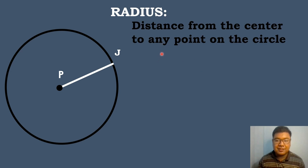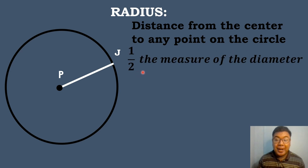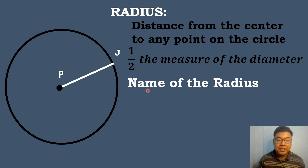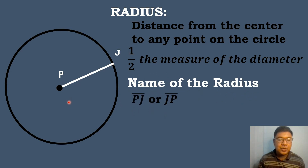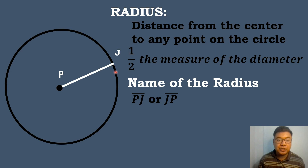The radius is the distance from the center to any point on the circle. It is also one half the measure of the diameter. The name of the radius here is segment BJ or segment JB. One endpoint is located on the center of the circle, which is point B, and the other endpoint is on the circle, which is point J.